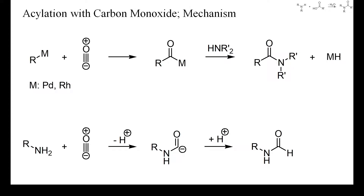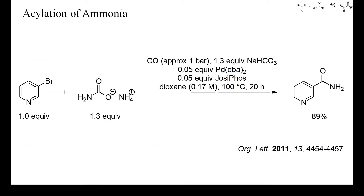Carbon monoxide is far less expensive than formic acid and therefore the reagent of choice for large-scale formylations. This is an example of the use of ammonium carbamate as a synthetic equivalent of ammonia in a palladium-catalyzed aminocarbonylation of 3-bromopyridine. No autoclave was required and a high yield of nicotinamide was obtained.